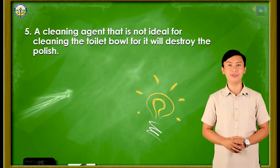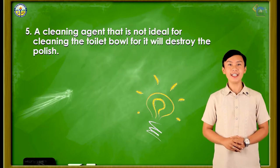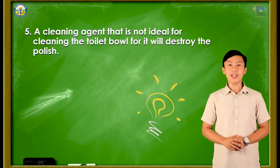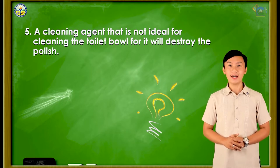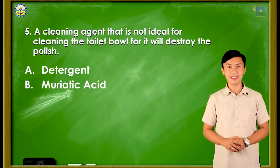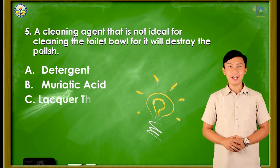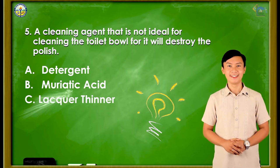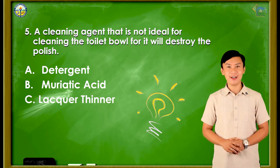Question number 5: A cleaning agent that is not ideal for cleaning the toilet bowl as it will destroy the polish. Letter A: Detergent. Letter B: Muriatic acid. Letter C: Liquor thinner. And the correct answer is letter B.